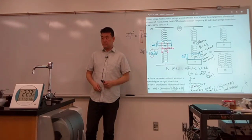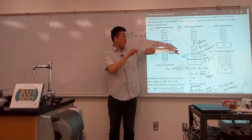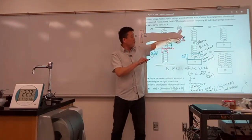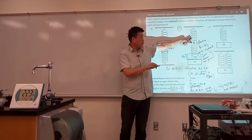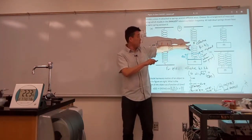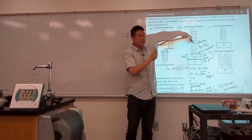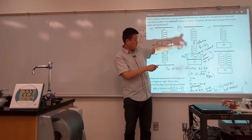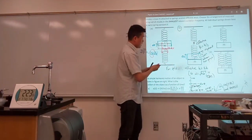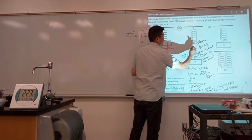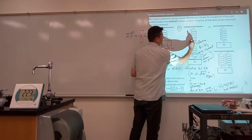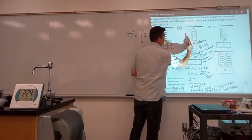How much are each spring being compressed by? Are they each being compressed by delta x? No, right? Because if they are each being compressed by delta x, then the total displacement at the end will be 2 delta x, right? It'll be delta x here, and then another delta x shorter. So that doesn't work. I want the total displacement to be delta x.